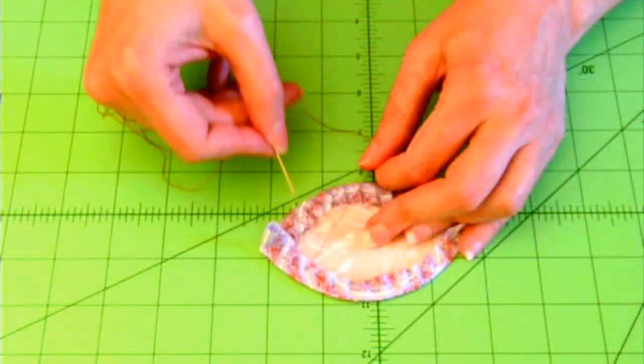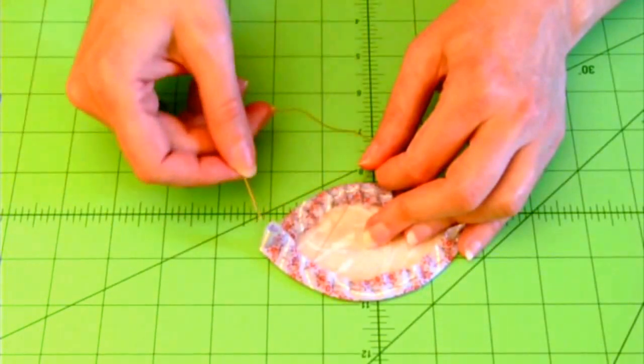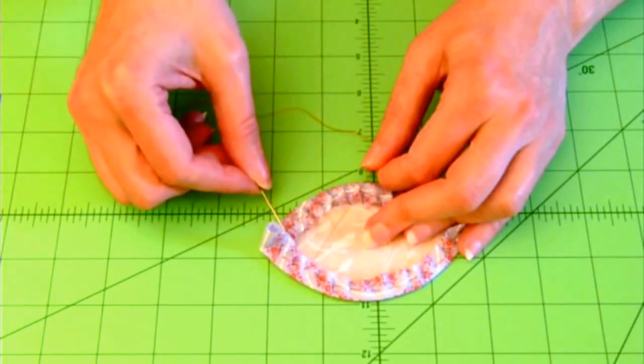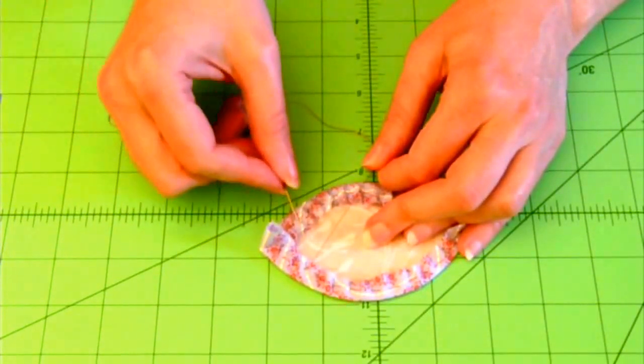So what I need to do now is a zigzag stitch that tightens this fabric up around this template shape. I'm going to use my running stitch line that I just made as a guideline for those stitches.